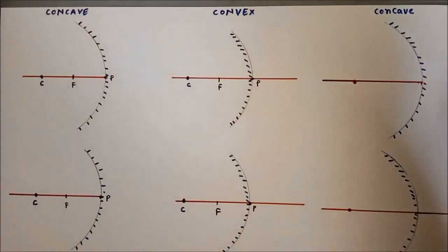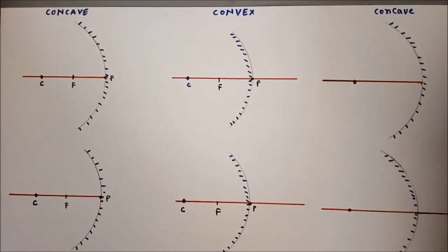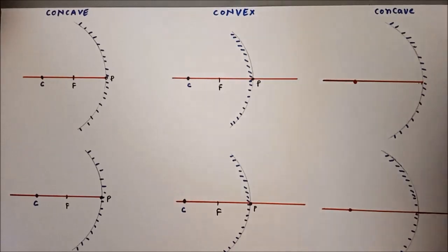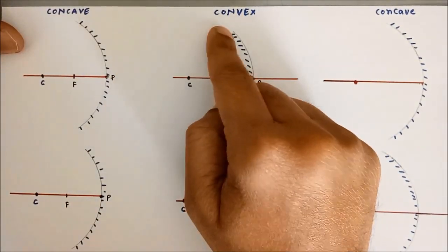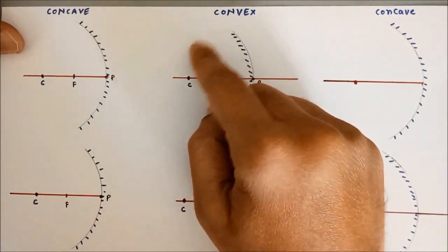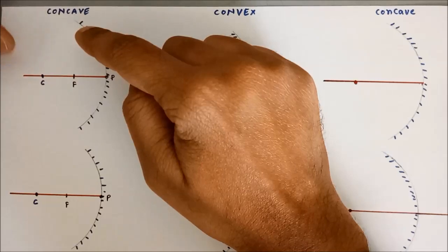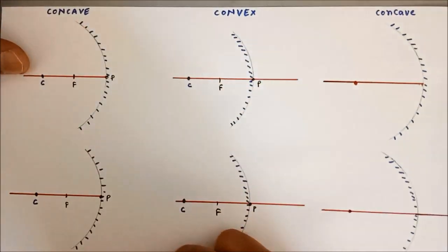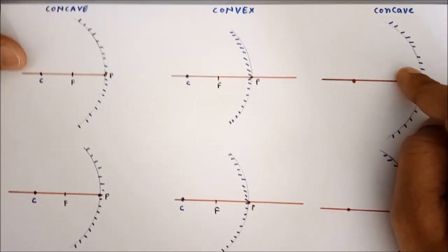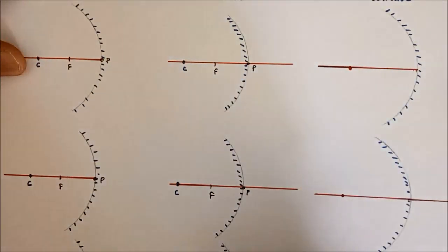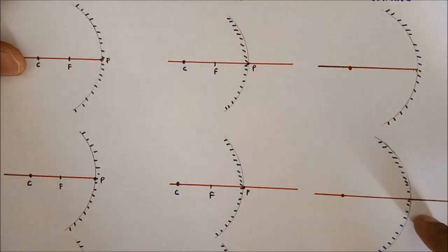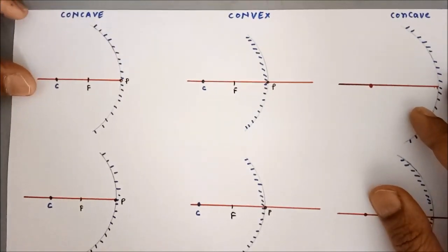Hello everyone. Today we are going to discuss the rules for image formation in curved mirrors, that is concave and convex mirrors. Here we have 1, 2, 3, and 4 concave mirrors and 1, 2, 3, and 4 convex mirrors as well.